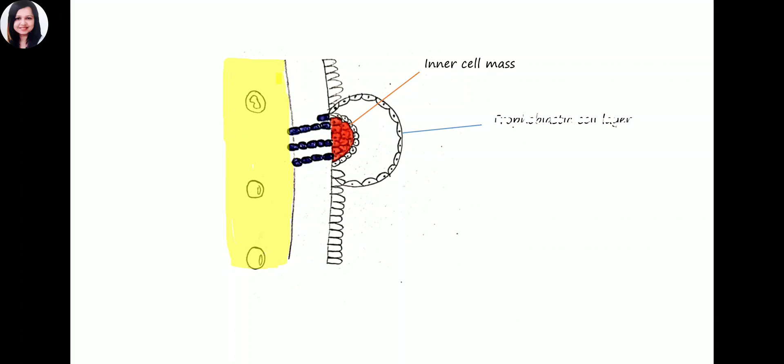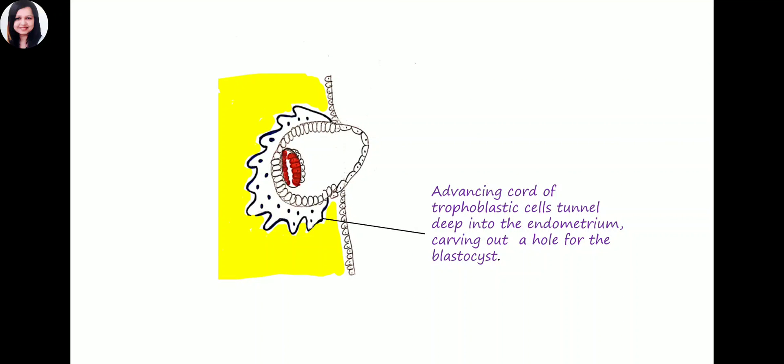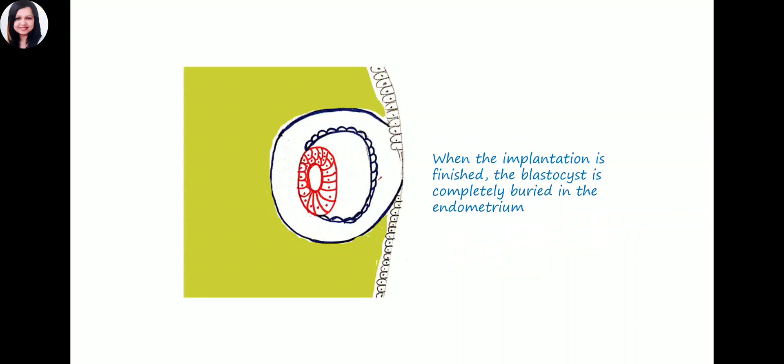Here we can see the inner cell mass, the trophoblastic cell layer, and the trophoblastic tissue penetrating the wall of the endometrium. In the second phase, the advancing cord of trophoblastic cells tunnel deep into the endometrium, carving out a hole inside so that the blastocyst can adjust itself. Here the implantation is finished. The blastocyst is completely buried in the endometrium.